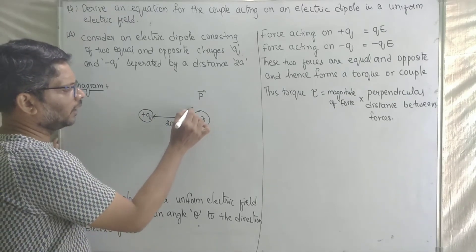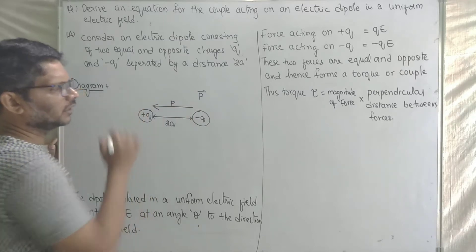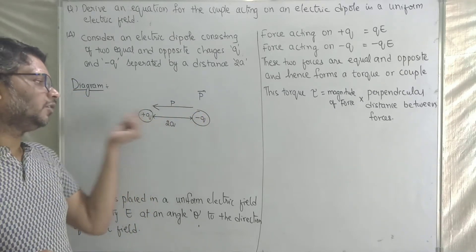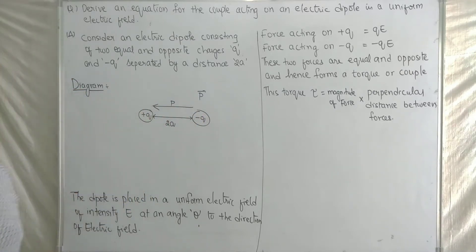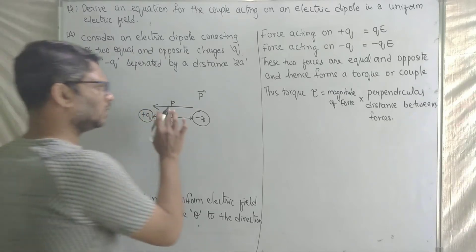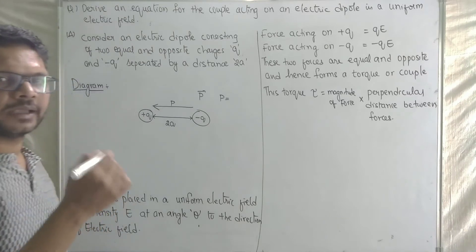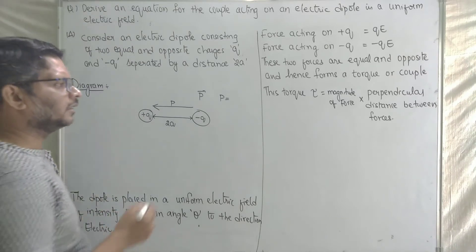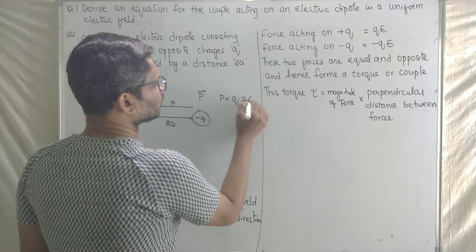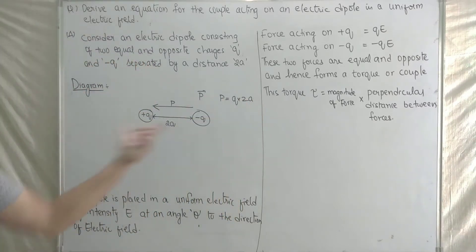From the negative charge to the positive charge — that direction gives the dipole moment. The magnitude of dipole moment is P equal to Q into 2a.